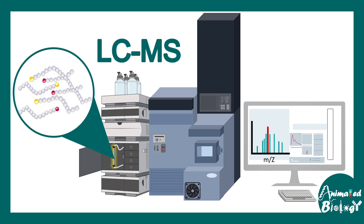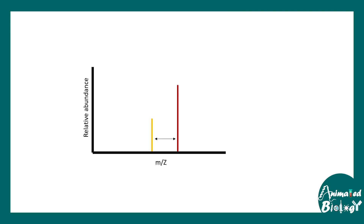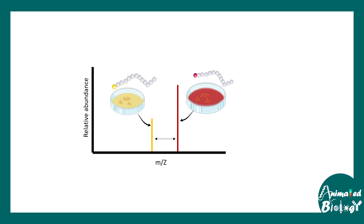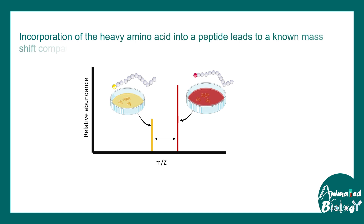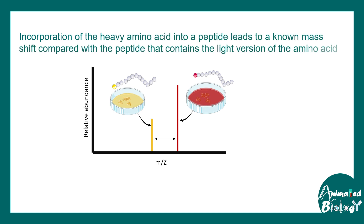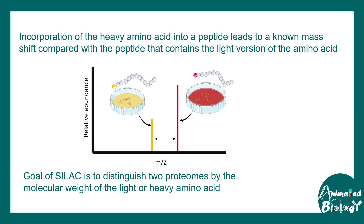From the mass spectrometry results, the two samples — either heavily labeled or lightly labeled amino acids — can be distinguished based on their molecular weight, because the m/z ratio would be different for the two different samples. This is how they can be distinguished and separated in a mass spectrometry analysis.